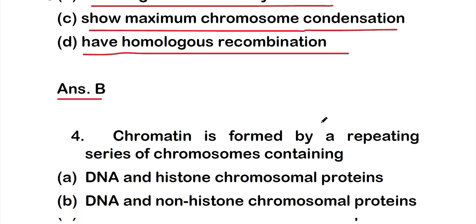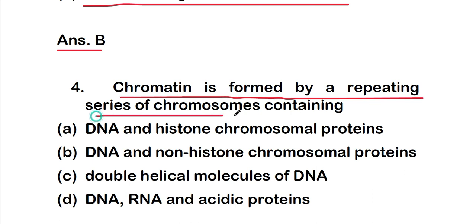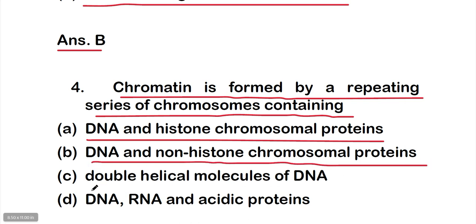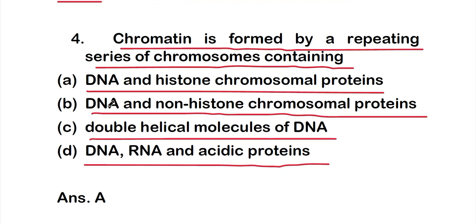Question four: chromatin is formed by a repeating series of chromosomes containing — option A: DNA and histone chromosomal proteins, option B: DNA and non-histone chromosomal proteins, option C: double helical molecules of DNA, or option D: DNA, RNA, and acidic proteins. The right answer is option A, DNA and histone chromosomal proteins.